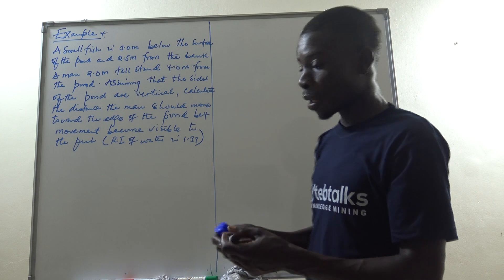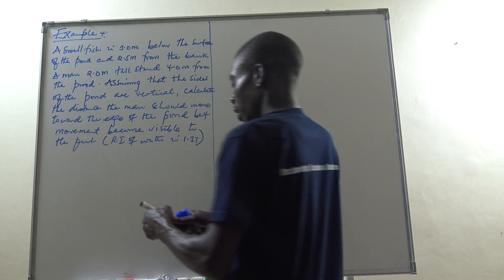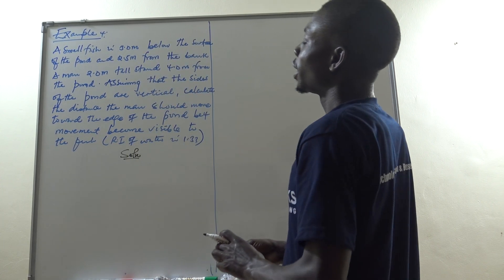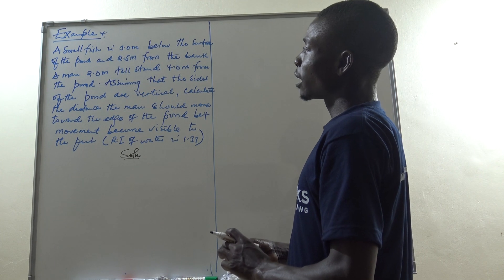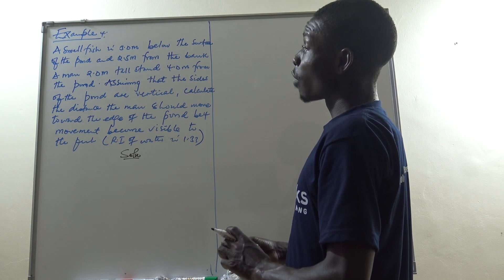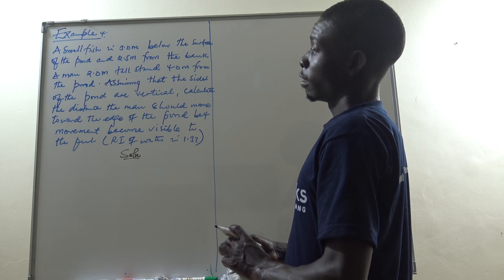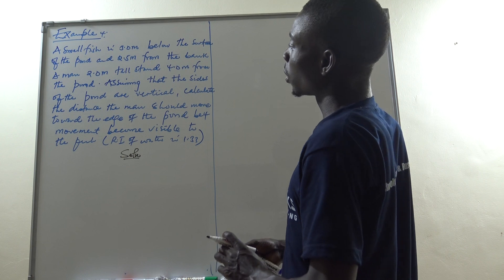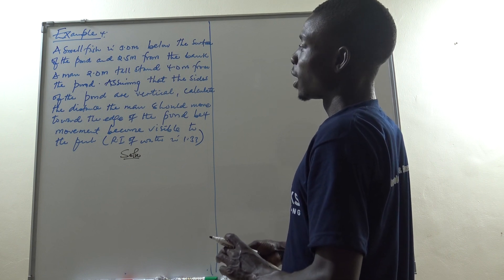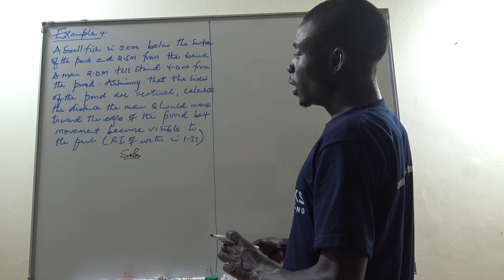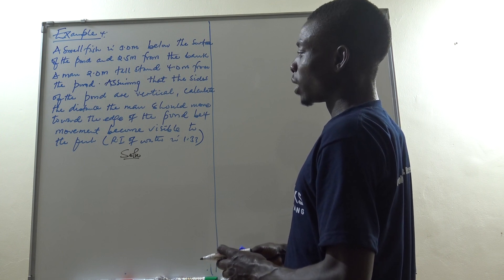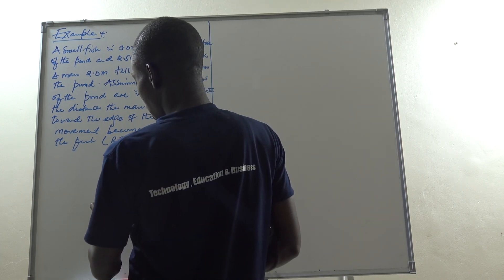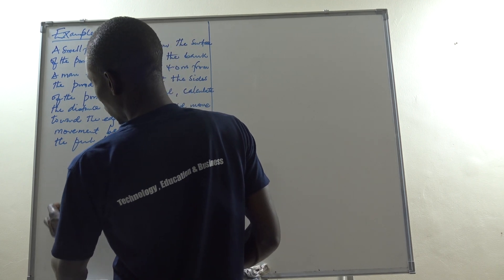This is our last example. The problem states that a smaller fish is 3.0 meters below the surface of a pond and 2.5 meters from the bank. A man who is 2.0 meters tall stands 4.0 meters from the pond. Assuming the side of the pond is vertical, calculate the distance the man should move towards the edge of the pond before his movement becomes visible to the fish. Let me do some sketching here.